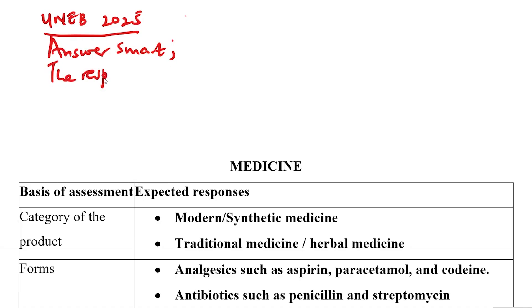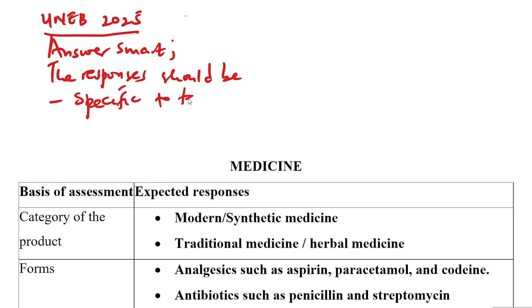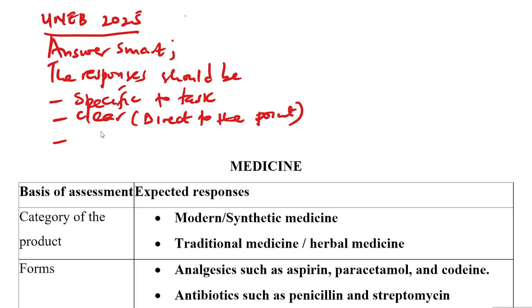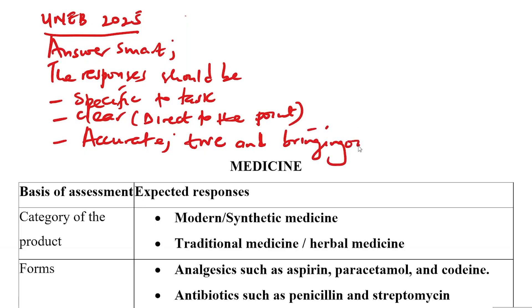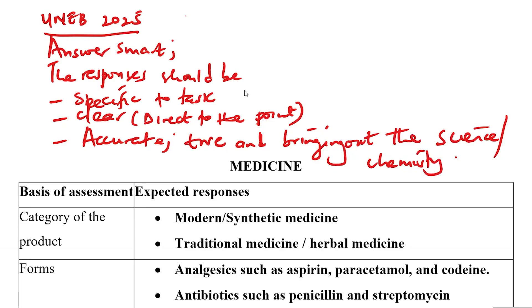The responses should reflect the following characteristics. Number one, responses should be specific to the task in the scenario. They should be very clear — direct to the point. Then, they should be very accurate, meaning the response should be true and bringing out the chemistry or the science in what the learner is trying to explain.